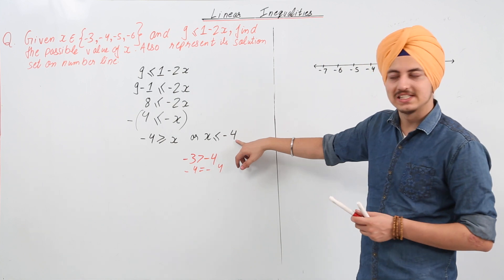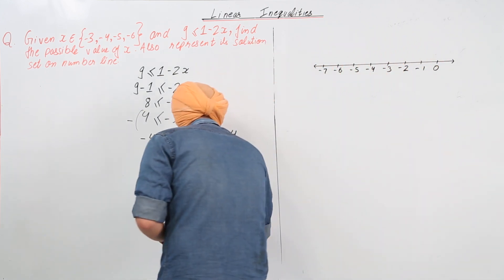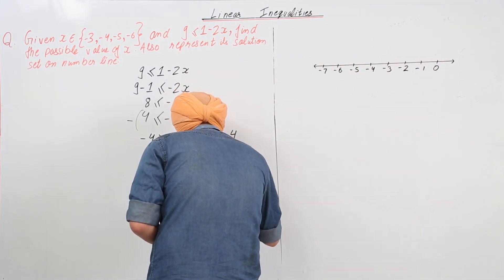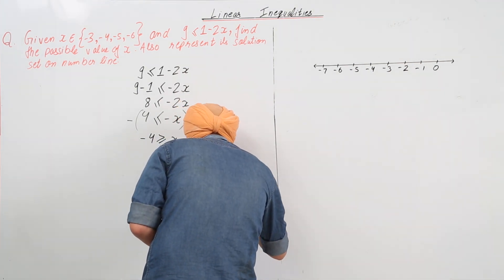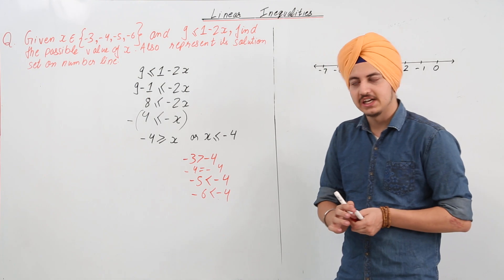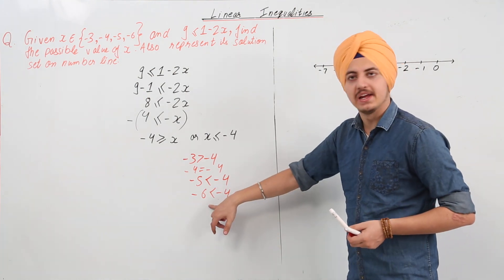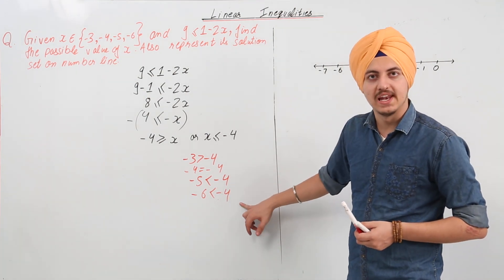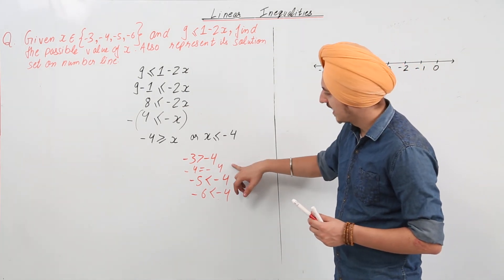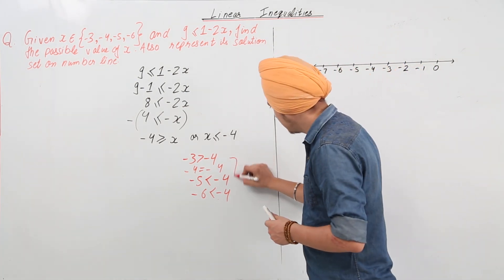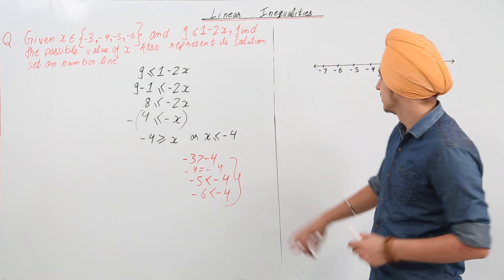So this value satisfies. Minus 5 is also less than minus 4 and minus 6 is also less than minus 4. Sorry for the mistake earlier. Minus 5 and minus 6 are both less than minus 4. So we need a value that is equal to or less than minus 4. So all these three values come into that section.